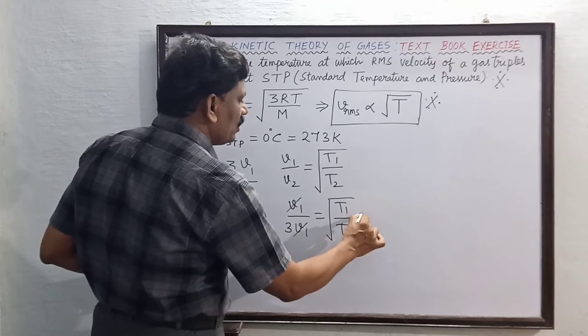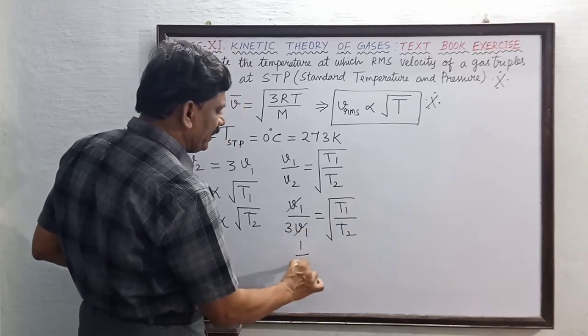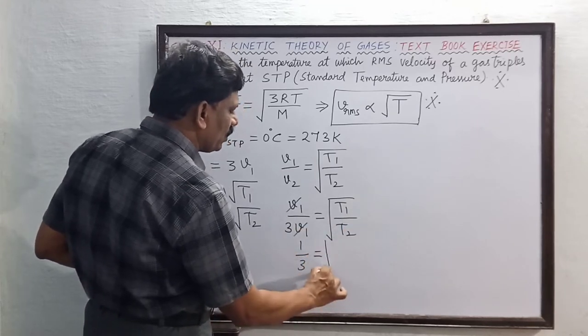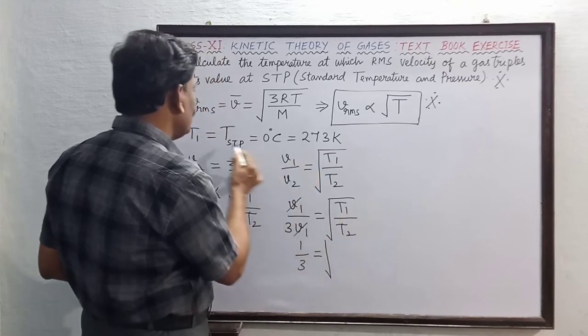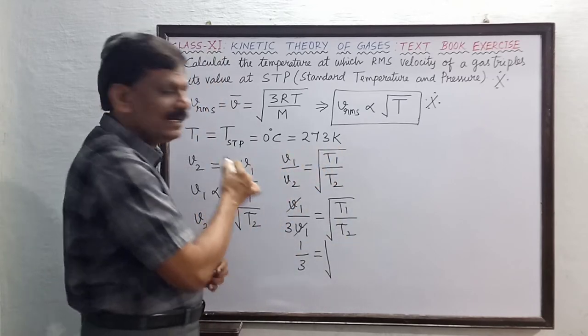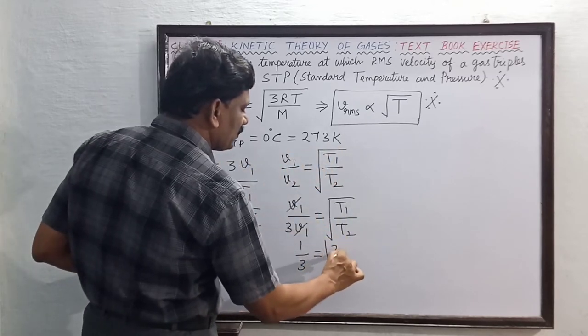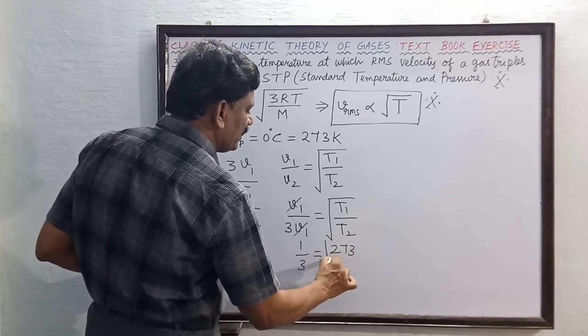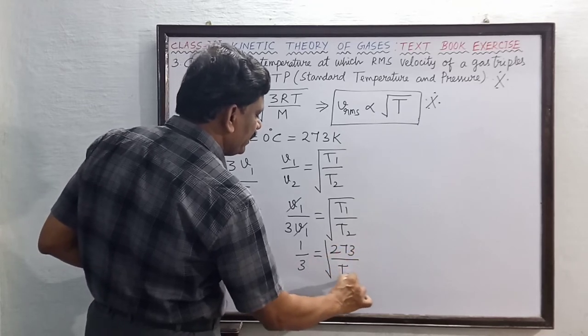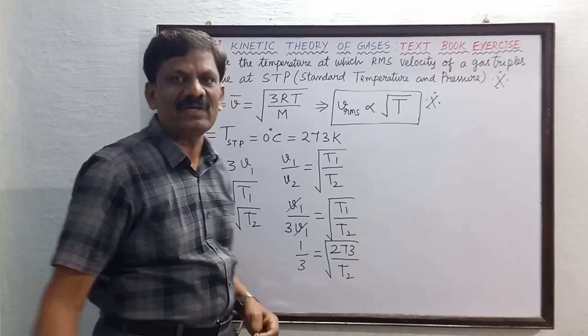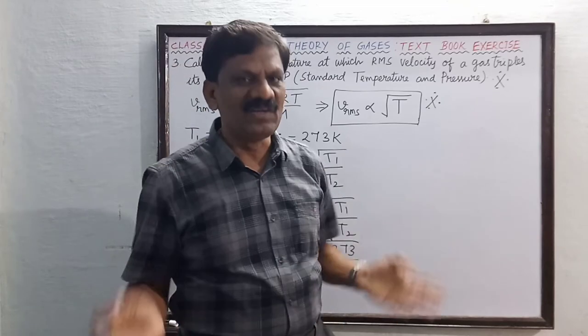This is square root of T1 by T2, which is 273 divided by T2 inside the square root. Now squaring on both sides.